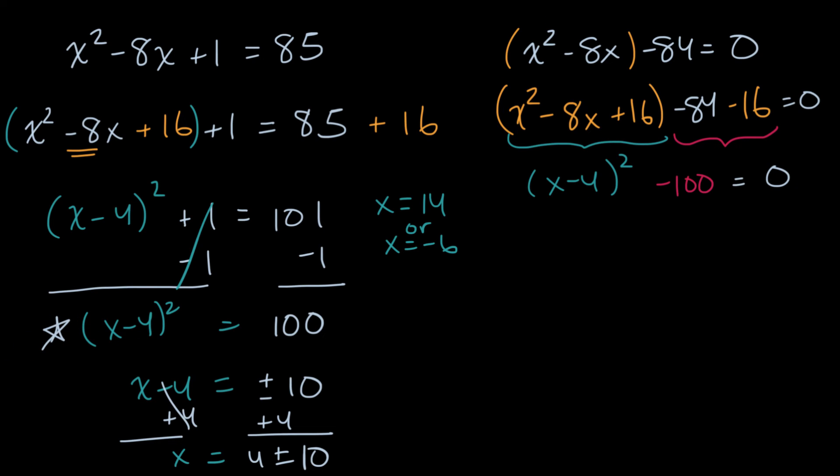Now another way that we could have approached it without completing the square, we could have said x squared minus 8x minus 84 is equal to zero. And think about what two numbers, if I multiply them, I get negative 84. So they'd have to have different signs since when I take their product, I get a negative number. And when I add them together, I get negative eight.